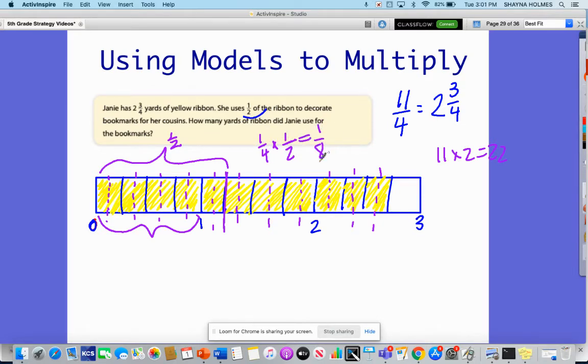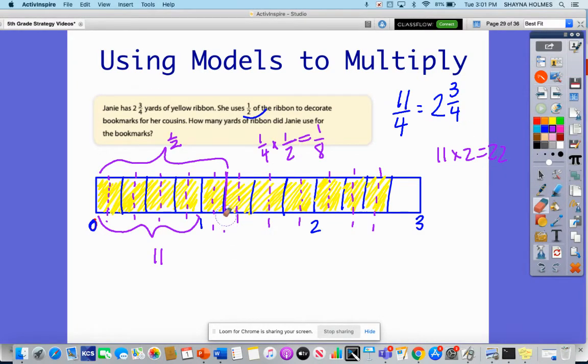Now I have 11 eighths. Let me redraw this to make sure. Counting one through eleven, this is the eleven mark. So I have 11/8 or I have 1⅜. That is what it looks like multiplying a mixed number by a fraction on a model. Let's look at another example.